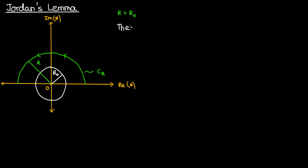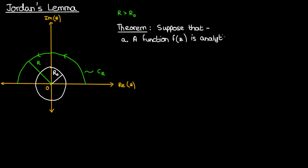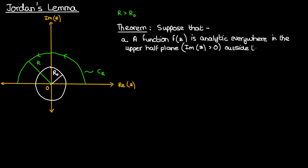Now that we have everything we're ready to state Jordan's lemma. Suppose we had a function f that was analytic or holomorphic — so differentiable everywhere — in the upper half plane that was outside the circle given by the magnitude of z equals capital R₀. So outside the smaller circle in the upper half plane.